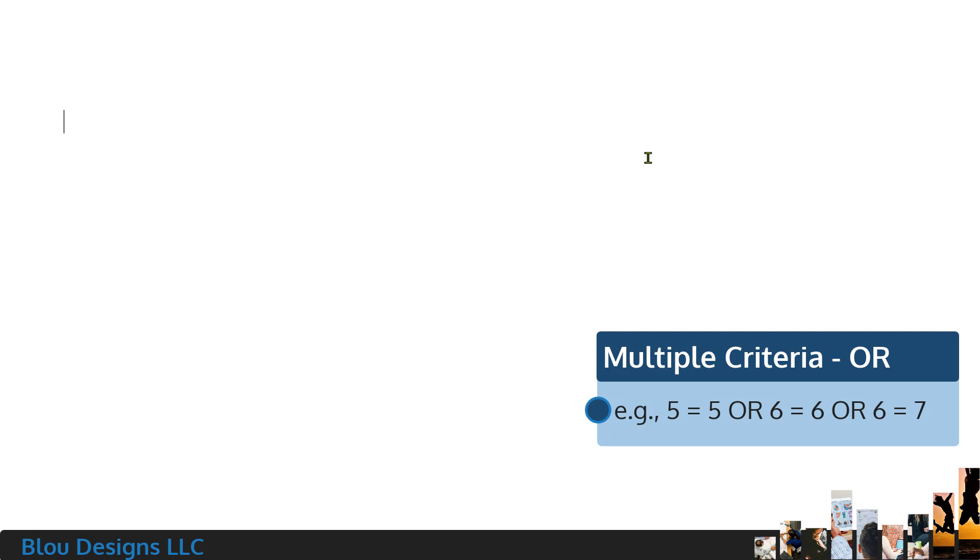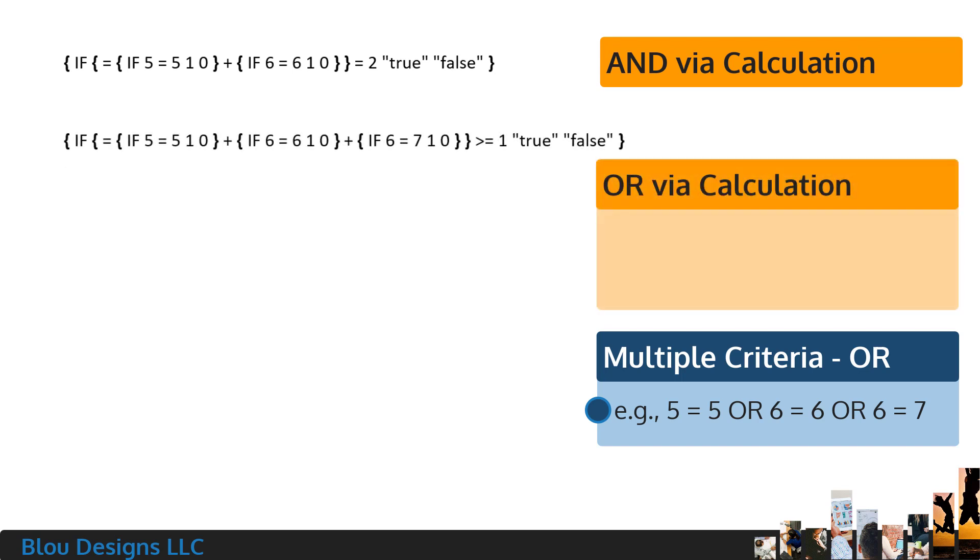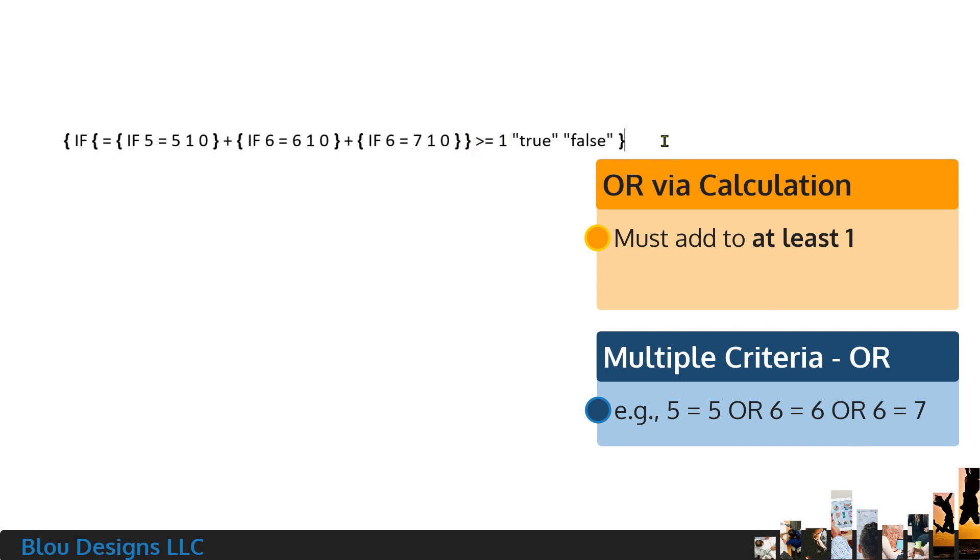Now, what if we wanted to check if any of the criteria are true to get the true text? That is, if 5 equals 5, or 6 equals 6, or 6 equals 7. We can use a variation of the calculation method we just used for AND. All we need to do is change how we evaluate the formula. Instead of checking to see if the formula evaluates to the number of criteria we're using, we just need to check to see if it's at least 1, that is, greater than or equal to 1, because we'll be happy if 5 equals 5, or 6 equals 6, or 6 equals 7. In this case, our formula will evaluate to 2 because 2 of our criteria are true, and our evaluation is flexible enough to handle this result and all of the other possibilities.